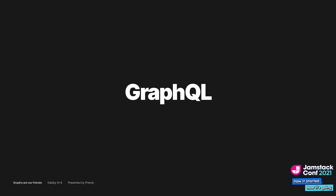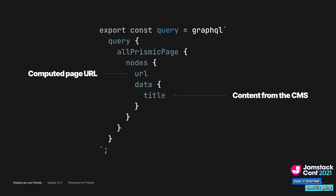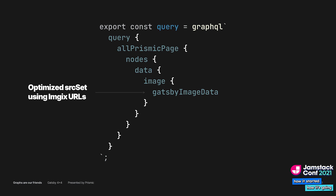Gatsby is well known for its GraphQL data interface. If you want to write content in markdown and convert it to HTML, you query the GraphQL API for it. If you want to fetch content from a content management system like Prismic, you query the GraphQL API for it. If you want to generate responsive and performant images for your site, you can query the GraphQL API for it.